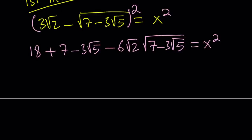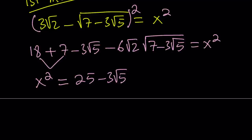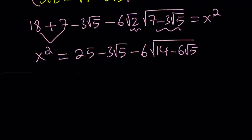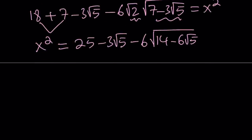Let's go ahead and simplify this a little bit. We can add these up — putting x squared on the left-hand side, that's 25 minus 3 root 5. Now we can multiply these radicals under the same radicand: 6 times the square root of 14 minus 6 root 5. We got a really complicated expression, but we can definitely simplify this.